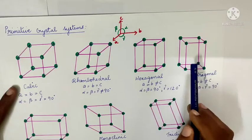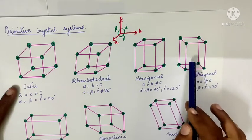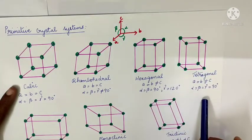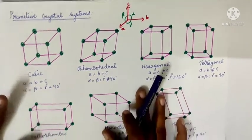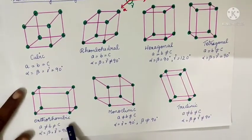For tetragonal: a and b are equal, and all three angles alpha, beta, and gamma are equal to 90 degrees.